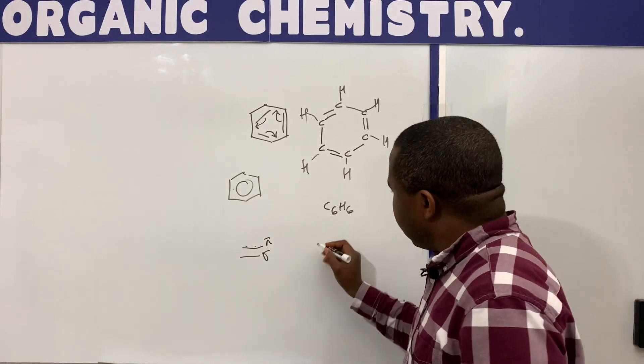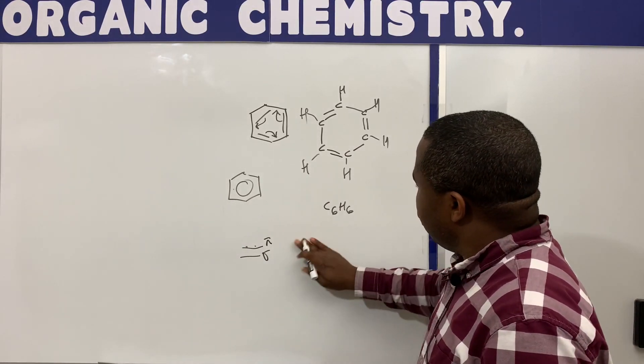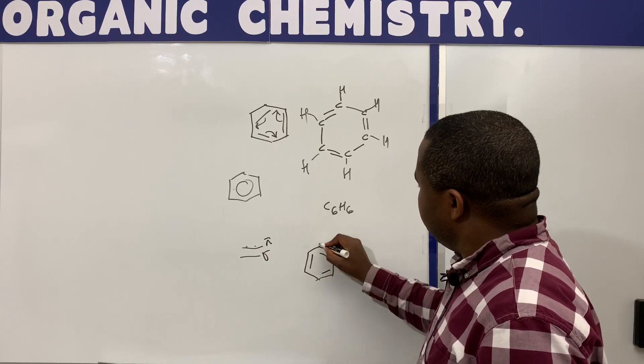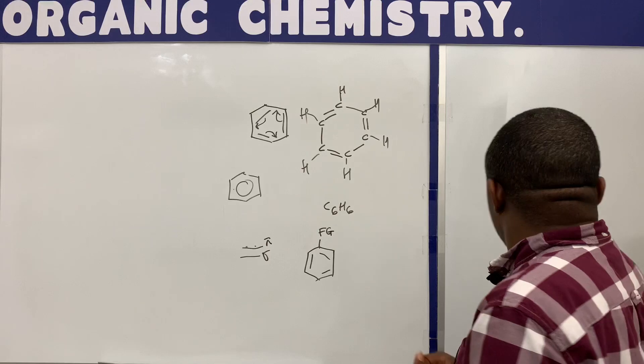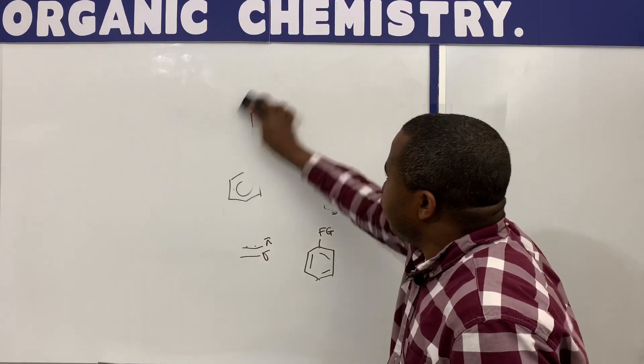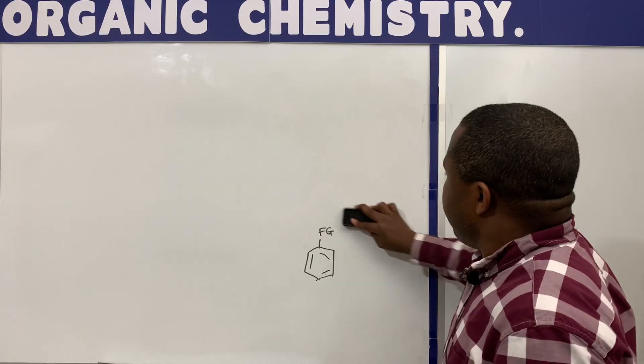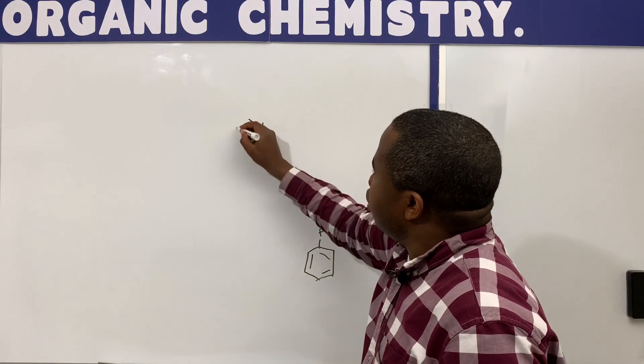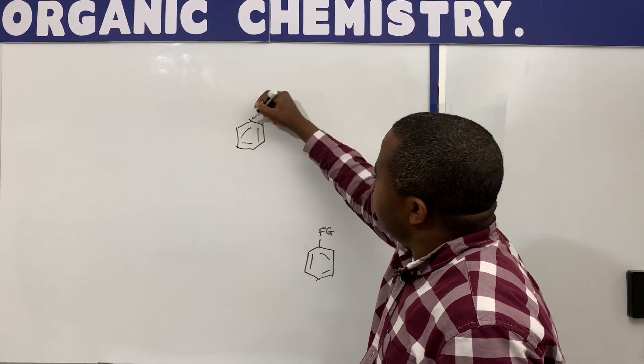And so when you start having functional groups on benzene, the functional groups can be different functional groups actually. It can be a hydroxyl group, it can be an amino group, it can be a cyano group. So depending on the functional groups that you have, that will determine the name.